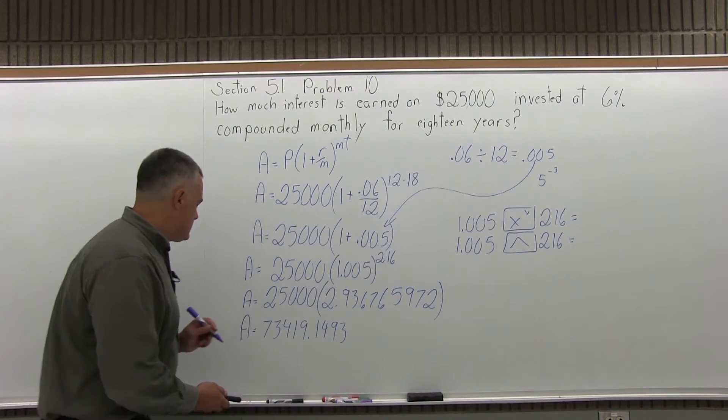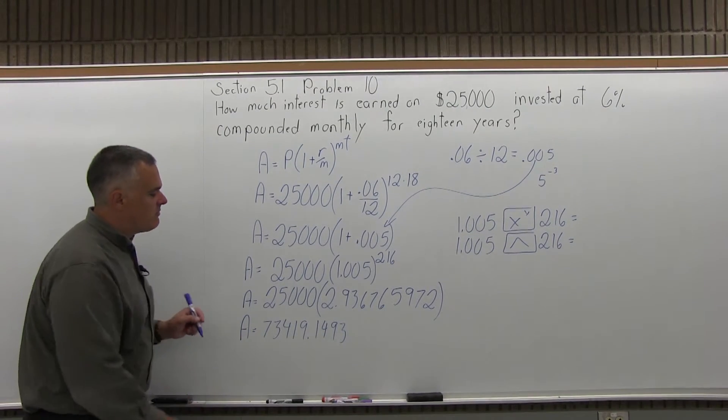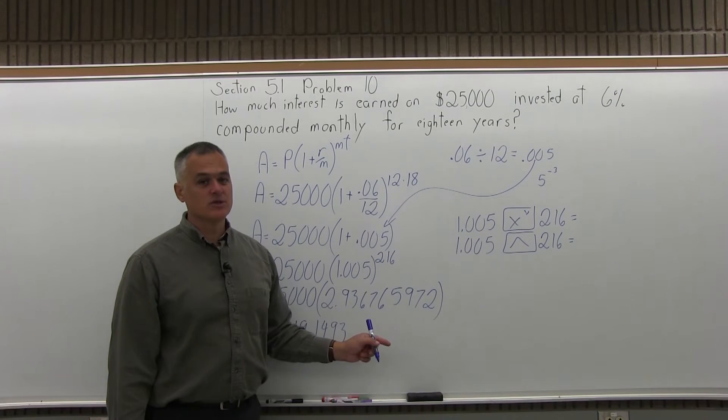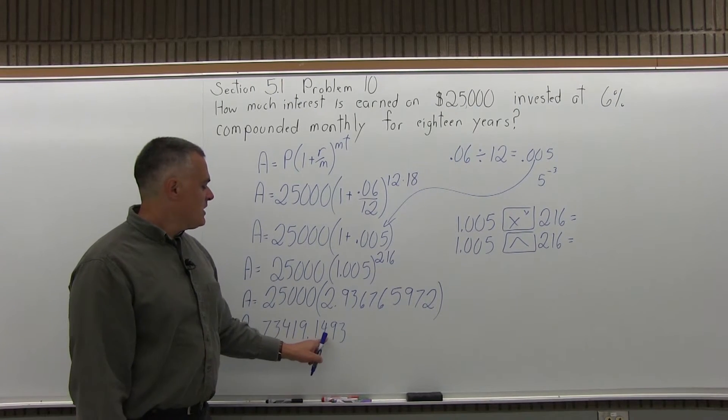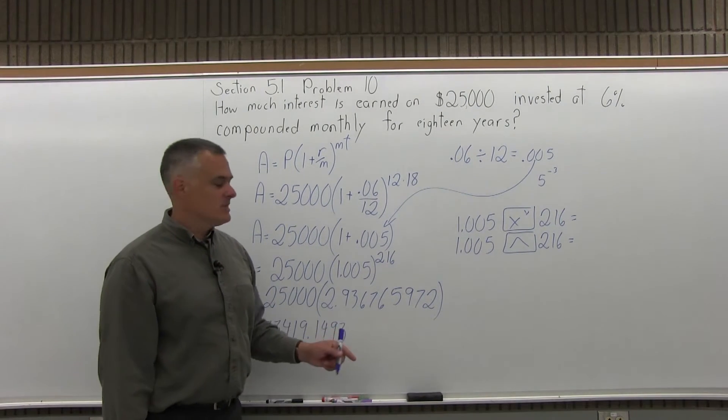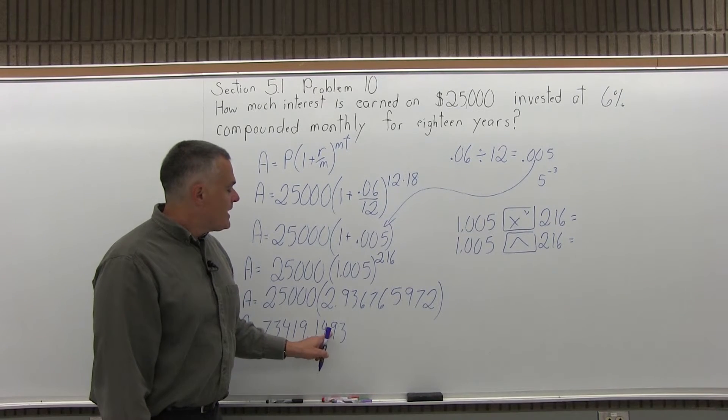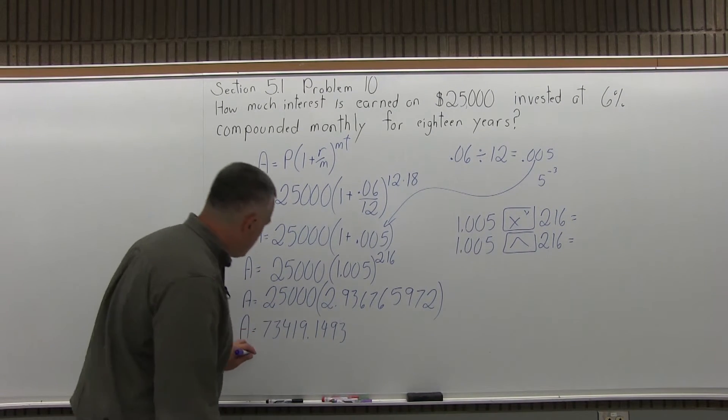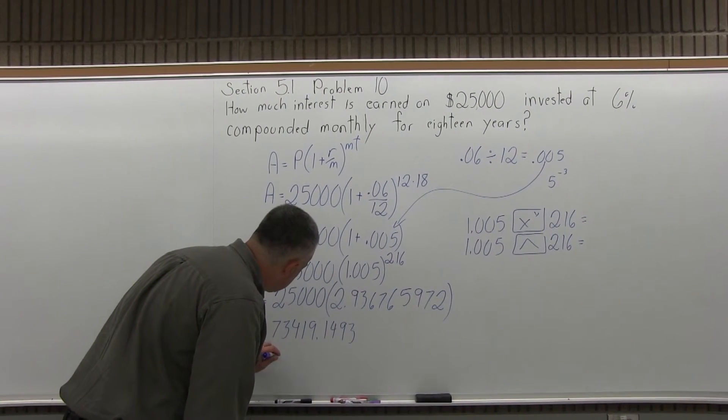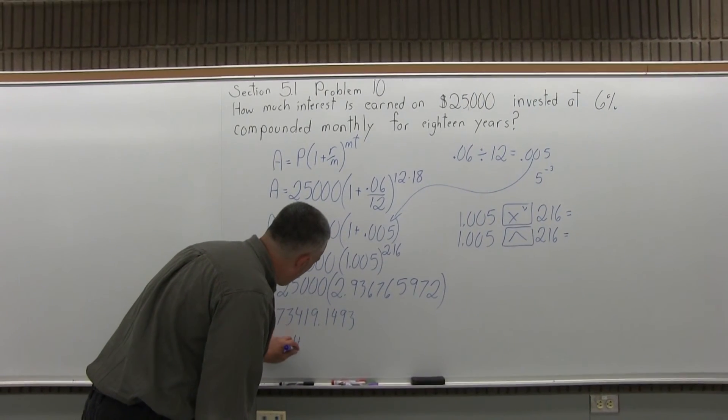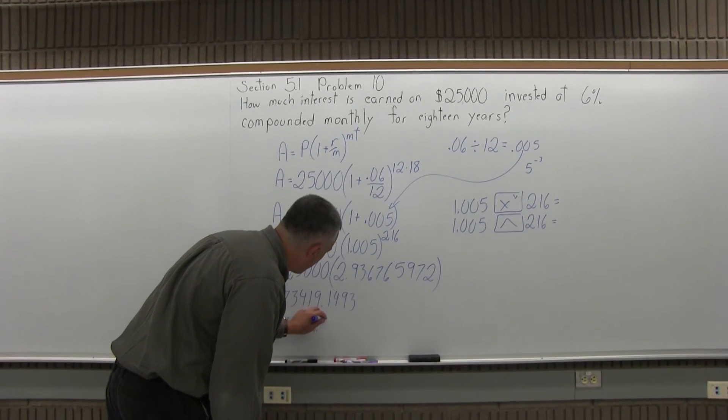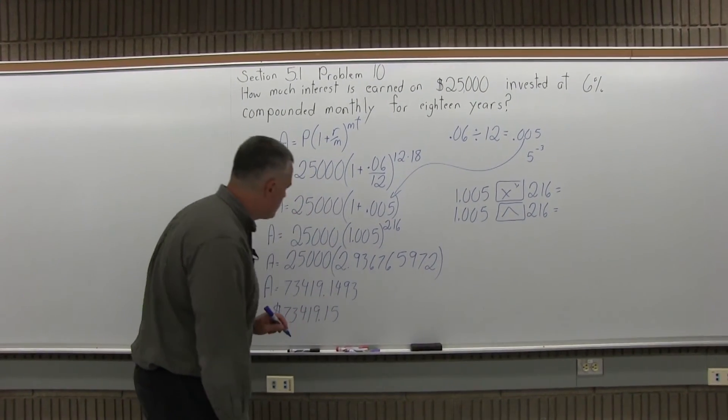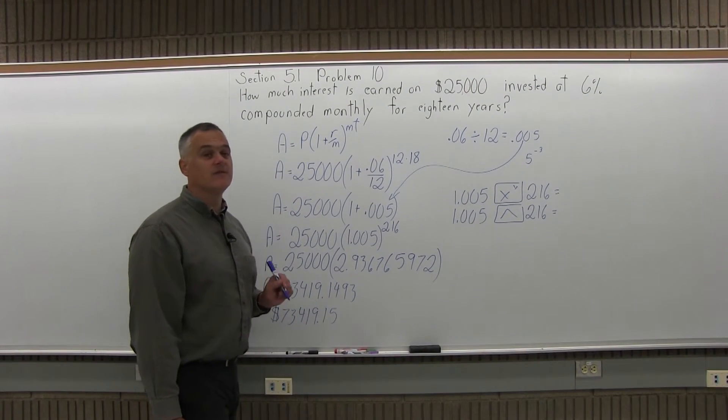Now, because this answer is in terms of money, I don't want to have 4 places after the decimal, it's too many. With money you go to 2 places after the decimal, it tells you how many cents. So the 1493 is enough to make it 15 cents. So my answer is going to be 73419.15, $73,419.15.